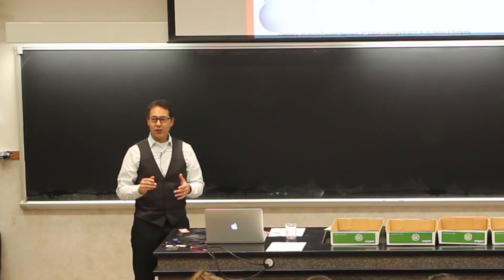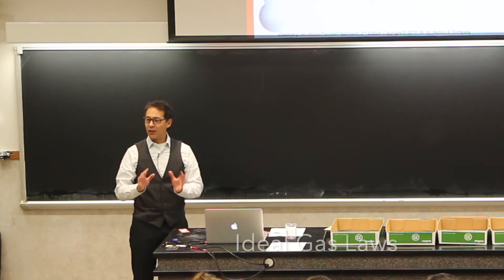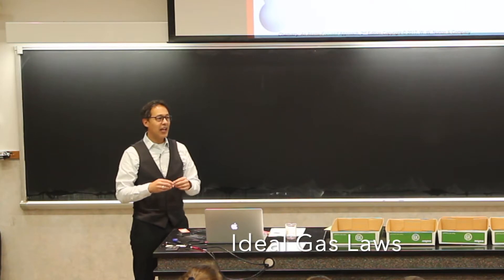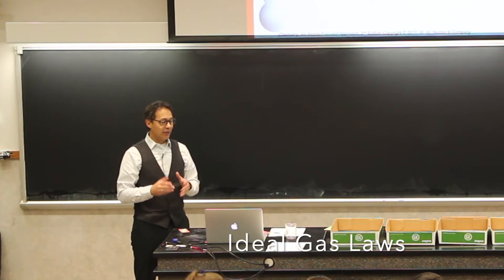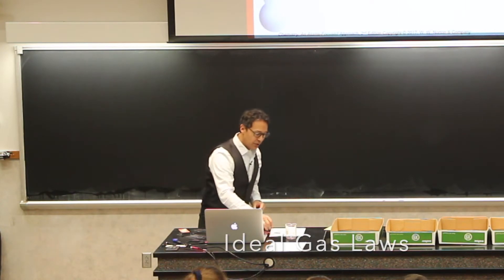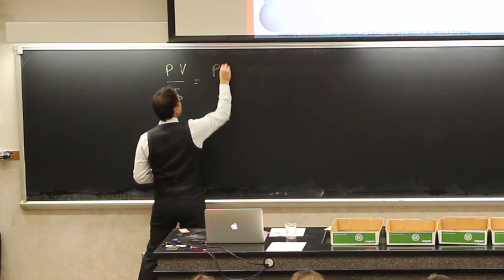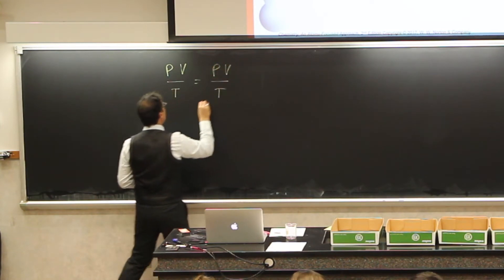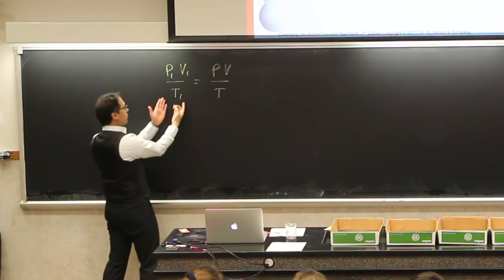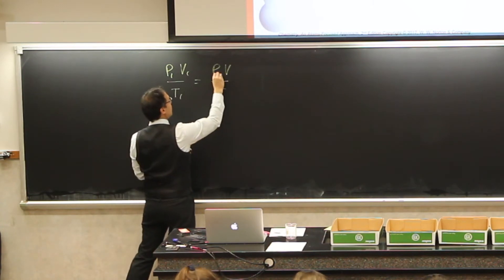So we have these gas laws, and the gas laws all work assuming that the gases follow these five principles. We call these the ideal principles, and if we follow the ideal principles, then we have this equation that tells us that PV over T equals PV over T. And this would be initial, and then this here would be final.